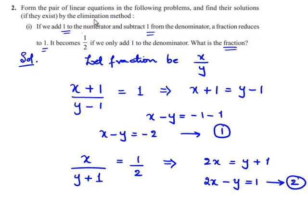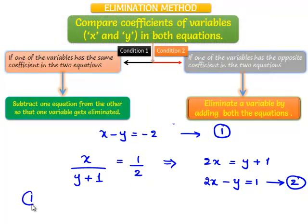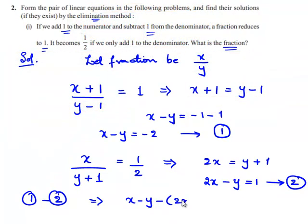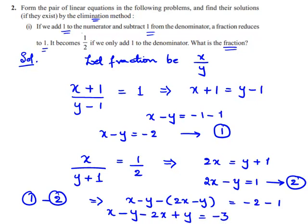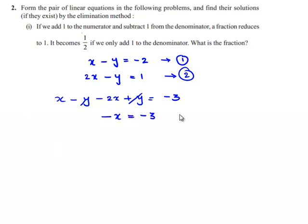We have to use the elimination method in order to find the solution for equations 1 and 2. Equation 1 minus equation 2 gives: x minus y minus (2x minus y) is equal to minus 2 minus 1. We get x minus y minus 2x plus y is equal to minus 3. Now, minus y and plus y cancel. x minus 2x is minus x, which is equal to minus 3. Finally, we get the value of x as 3.